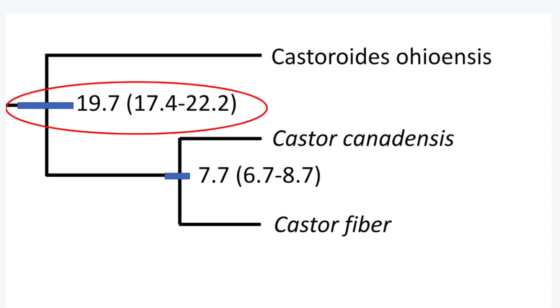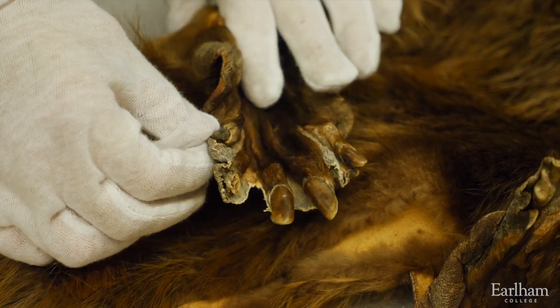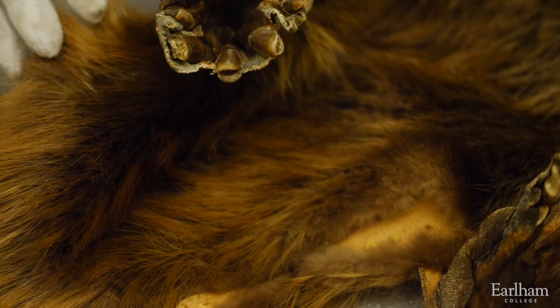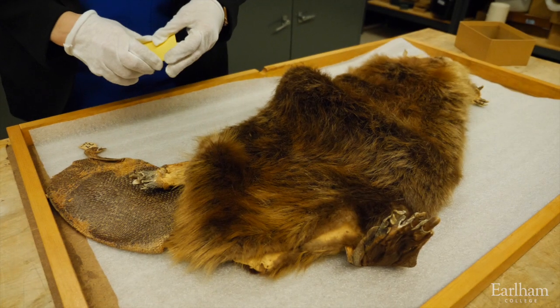Aquatic adaptations are also present in a nearly 23 million-year-old extinct beaver, Steneofiber, including a notched combing claw used by modern beavers to waterproof their fur. So, it's likely that beavers became aquatic even before our estimated 19.7 million years.